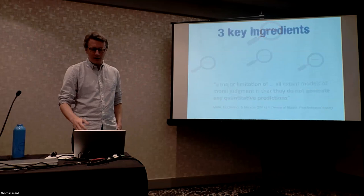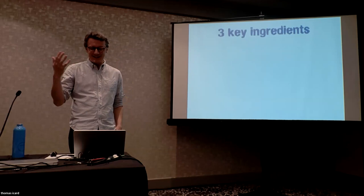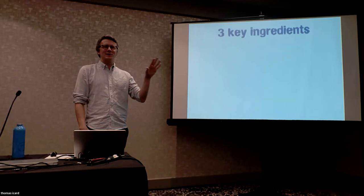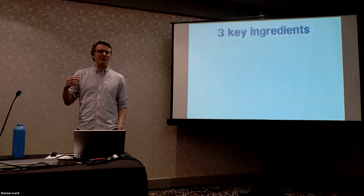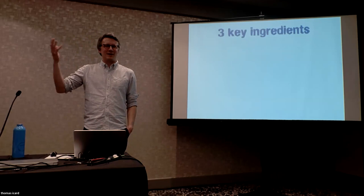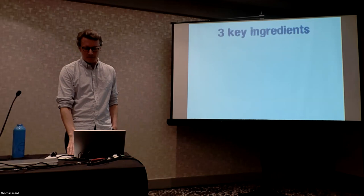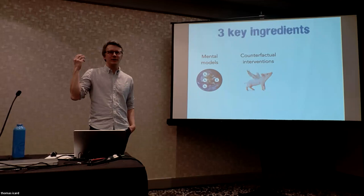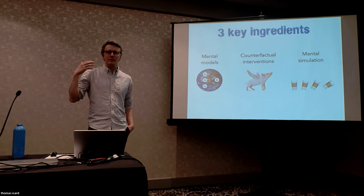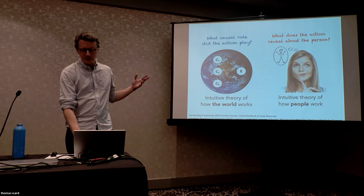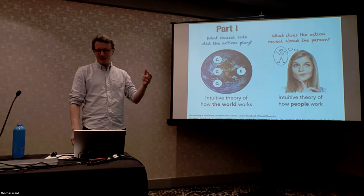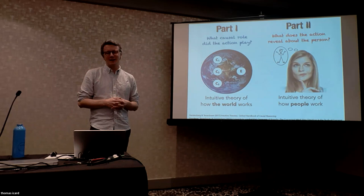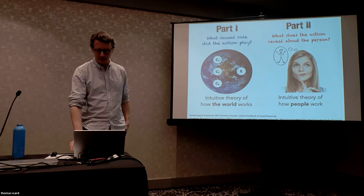There are three key ingredients necessary to understand how people make causal judgments about particular events — not the kind based on correlational evidence, but rather a single observed event where we're interested in why it happened, or to what extent somebody was responsible. The ingredients are: a mental model of the world — an intuitive theory of physics or psychology — the ability to perform counterfactual interventions on that model, and the ability to simulate what the consequences of those counterfactual interventions would have been.